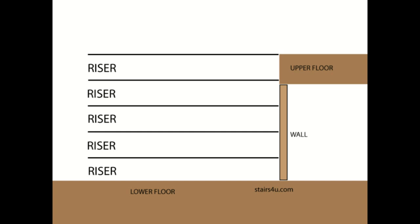You can see right here we have five equal risers. This is the vertical distance split up into equal increments.